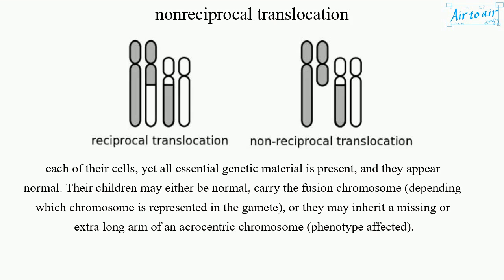The children of Robertsonian translocation carriers may either be normal, carry the fusion chromosome, or — depending on which chromosome is represented in the gamete — may inherit a missing or extra long arm of an acrocentric chromosome, resulting in an affected phenotype.